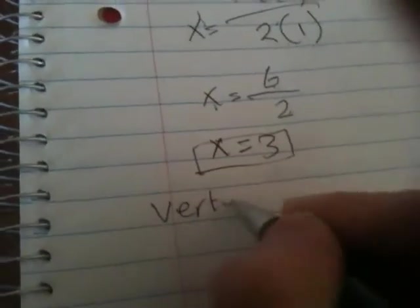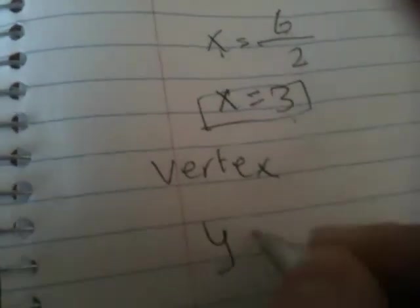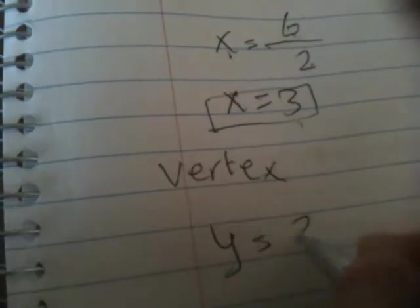Now we'll find our vertex. We take our axis of symmetry and plug it into our formula, so y = 3² - 6(3) + 7.